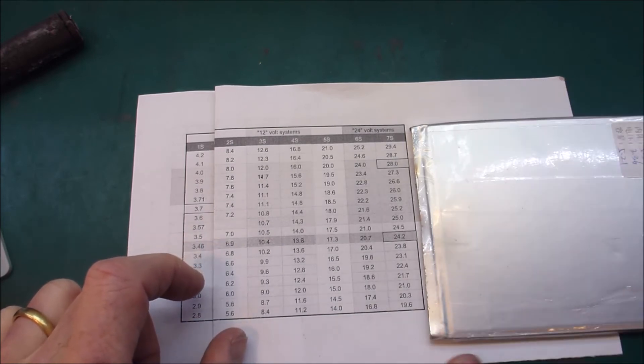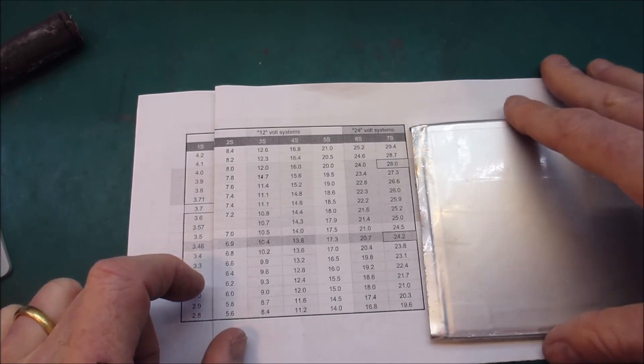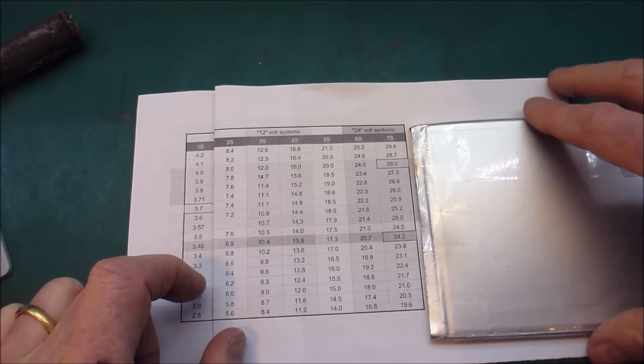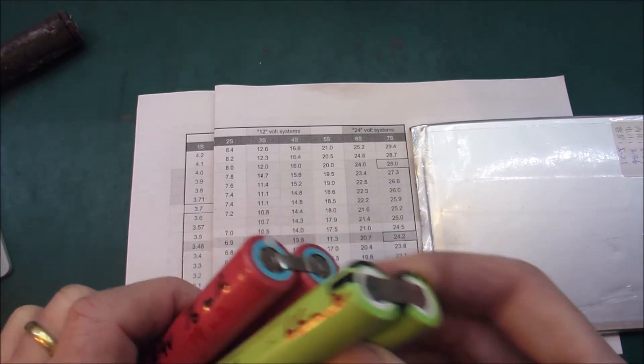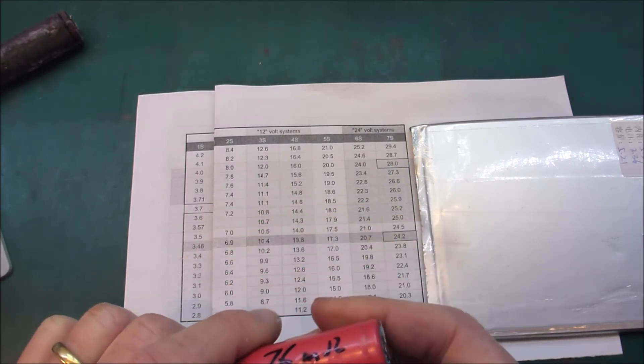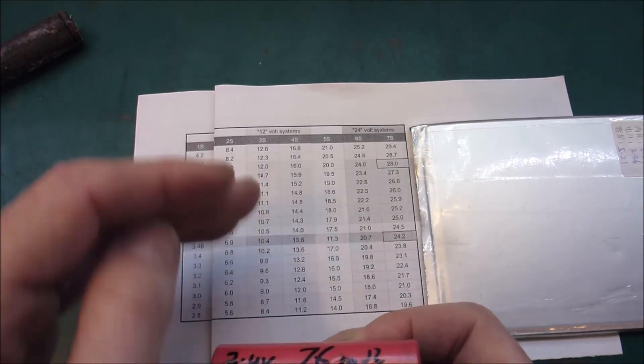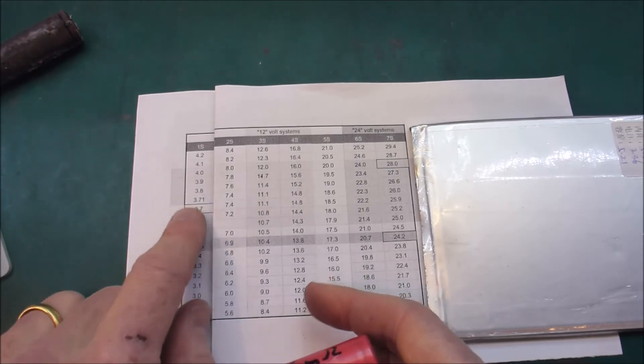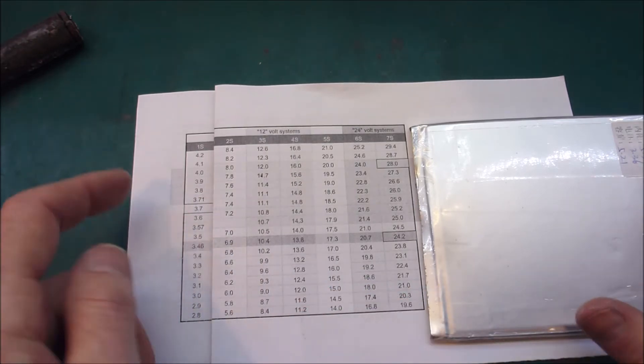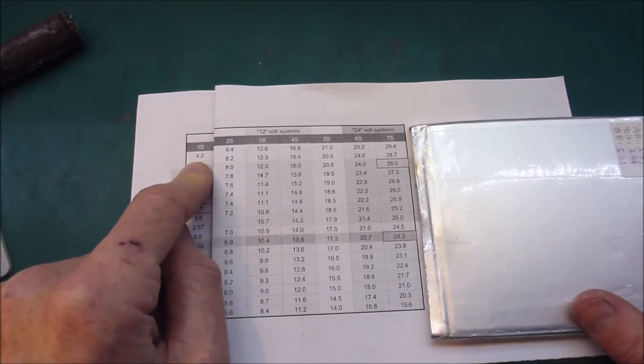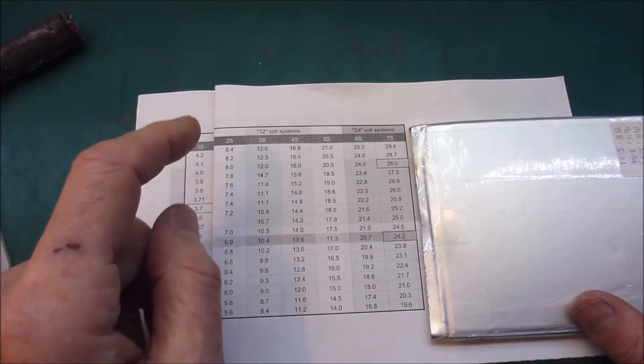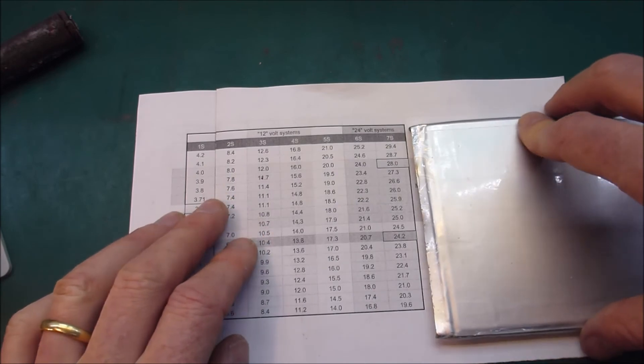But if you look at different sites each one seems to have its own spread of numbers. And mostly that's because each cell has its own discharge profile so its own state of charge profile in relation to the voltage. And also because of the way lithiums charge the voltage is not an accurate indication of how much capacity is in the cell.